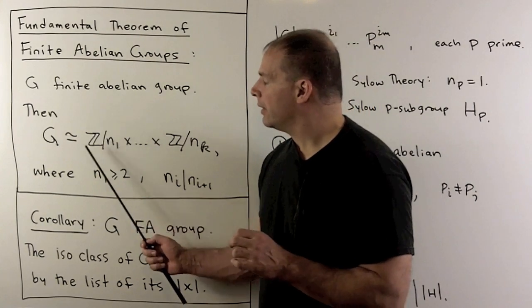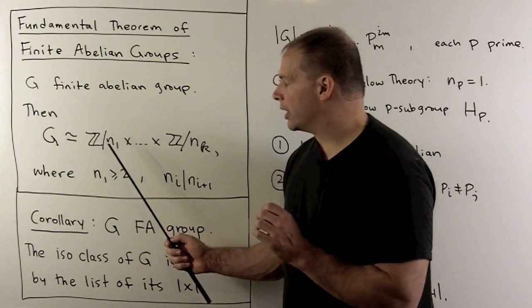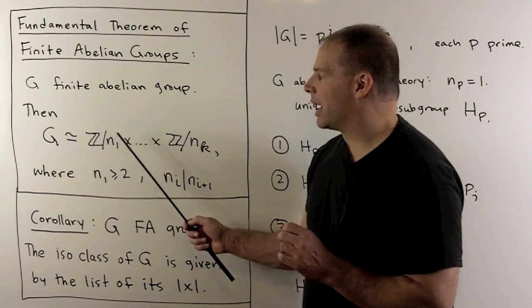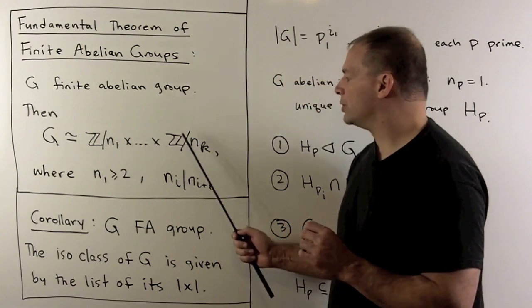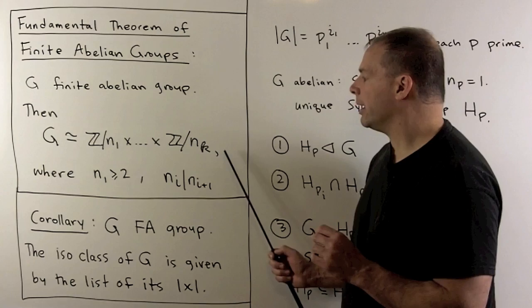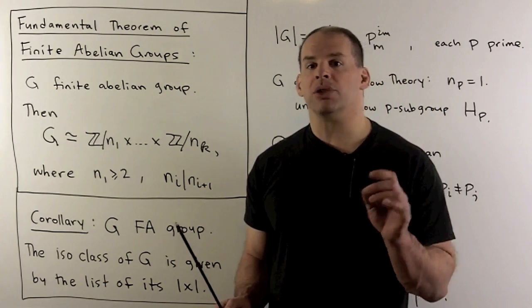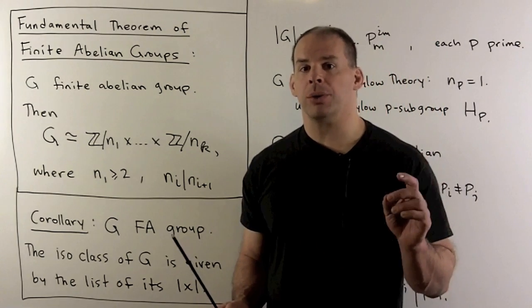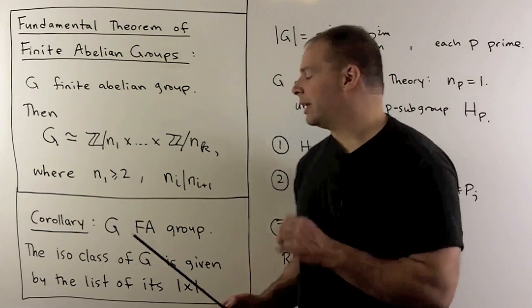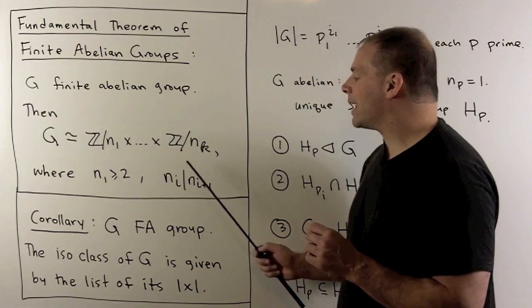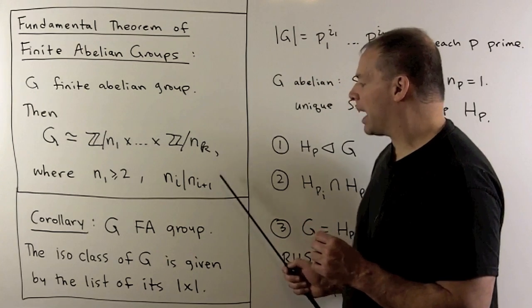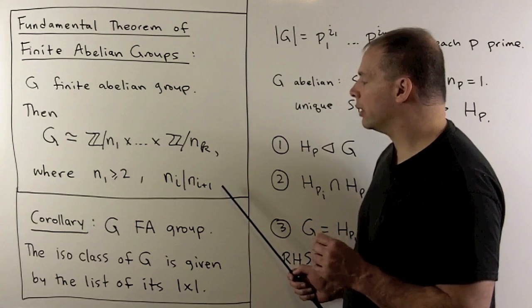Specifically, if the factors are given as Z mod N₁ through Z mod Nₖ, we can arrange it so that N₁ is greater than or equal to 2, and each Nᵢ divides Nᵢ₊₁.